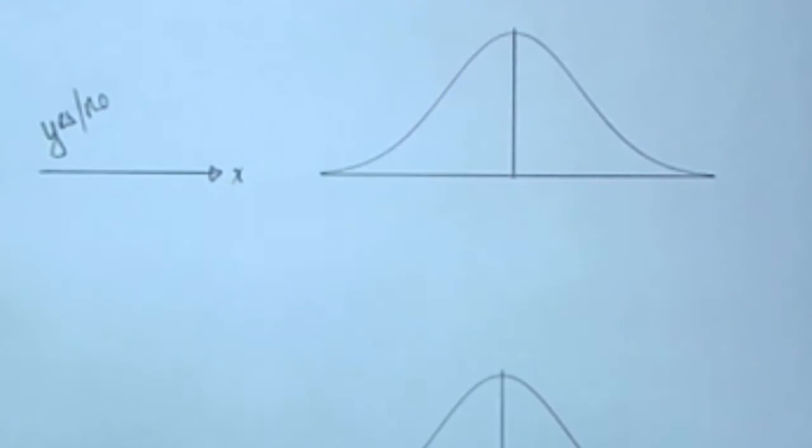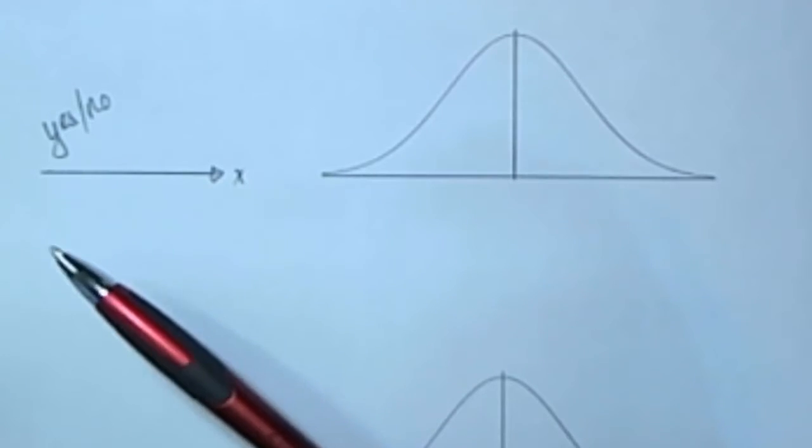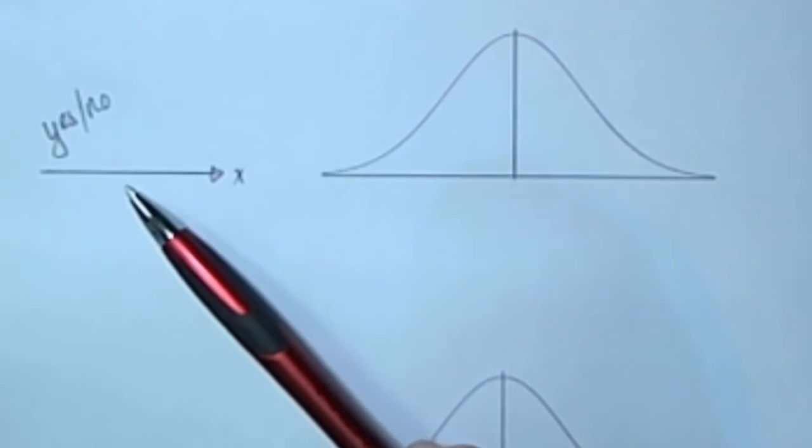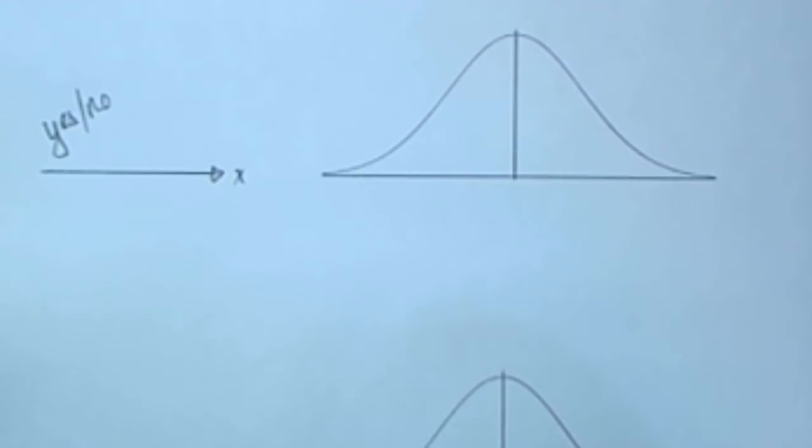In a proportion problem, the random variable happens to be a categorical variable, and we're looking at a yes-no question for each individual. In the population we're interested in knowing whether they are in the category or not.